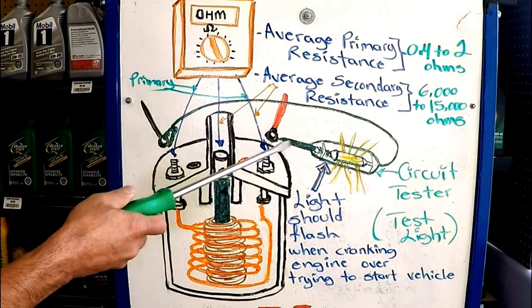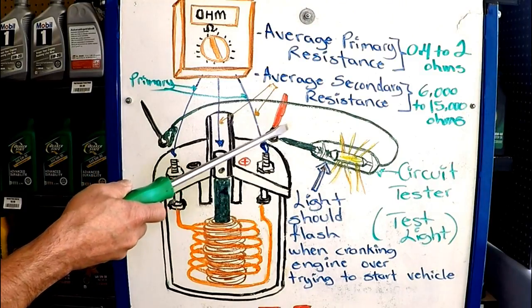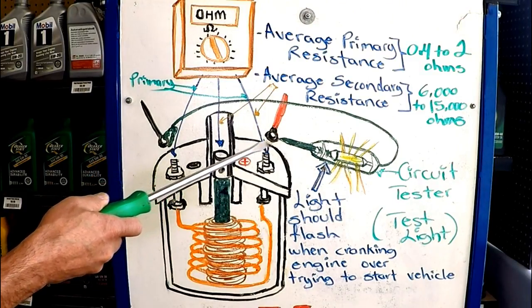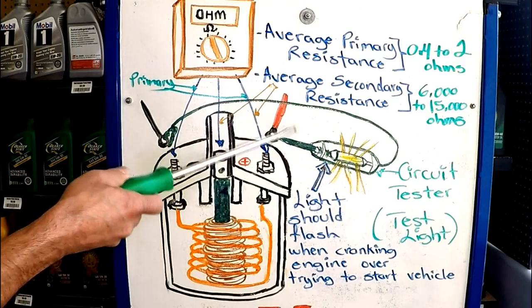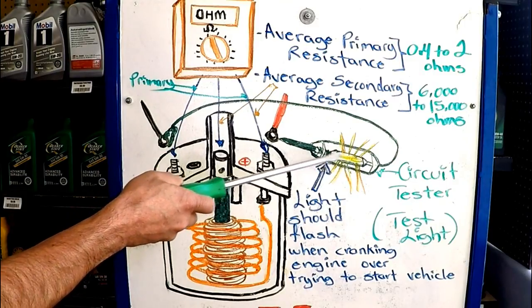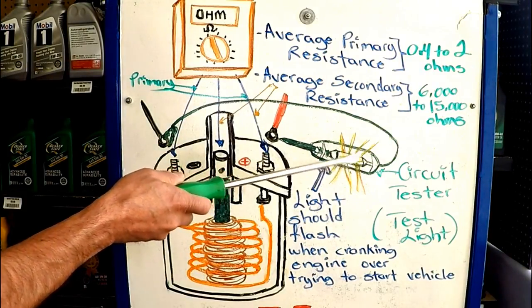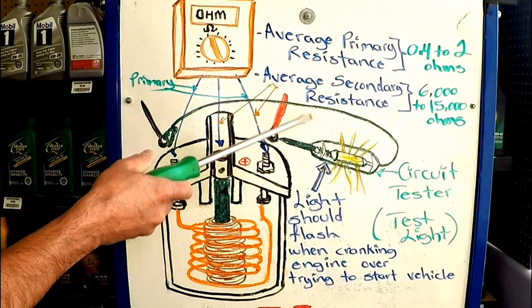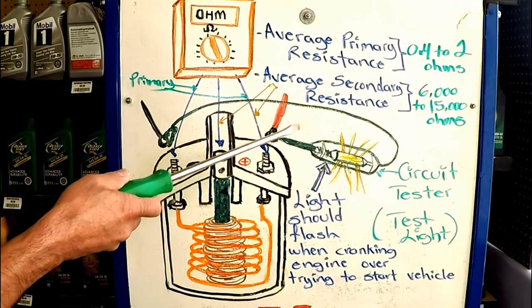So what you do next, you turn the key on, make sure that there is power. This should light up. Then you leave the ignition key on. Right after that you can either use a remote starter to crank the engine over, or you can have an assistant turn it over, whichever method you want to use. And while the engine is being turned over, the light on the test light should flash on and off.